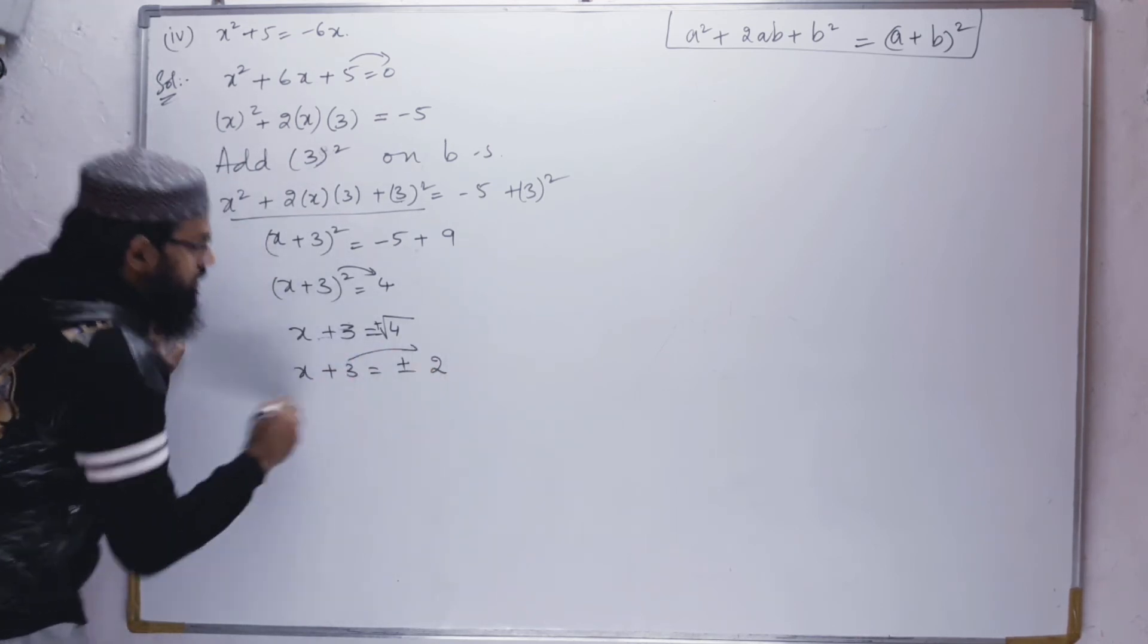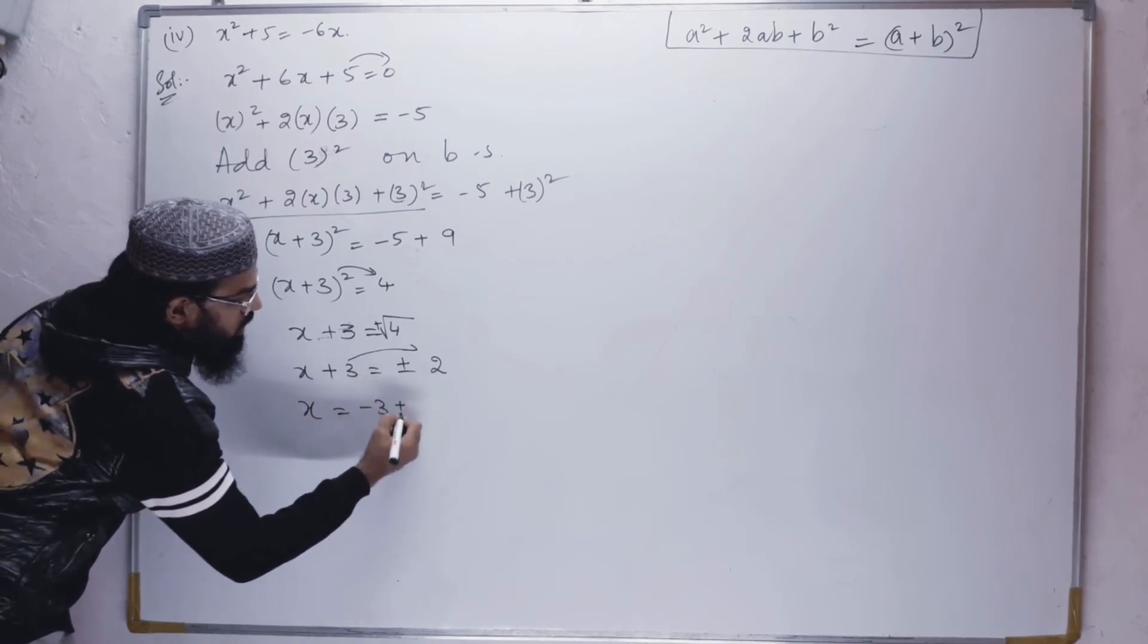Now move this 3 to the other side. So x = -3 ± 2.